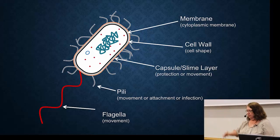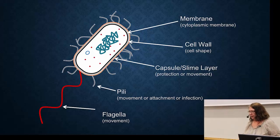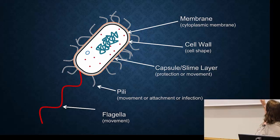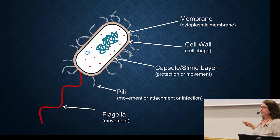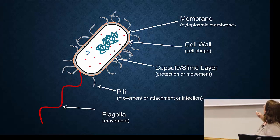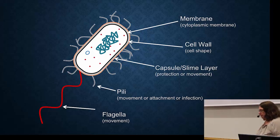Continuing from the outside of the cell, we covered the cytoplasmic membrane and the extra membrane for gram-negative bacteria, then the cell wall for cell shape. And then you've got a capsule or slime layer on most bacteria.